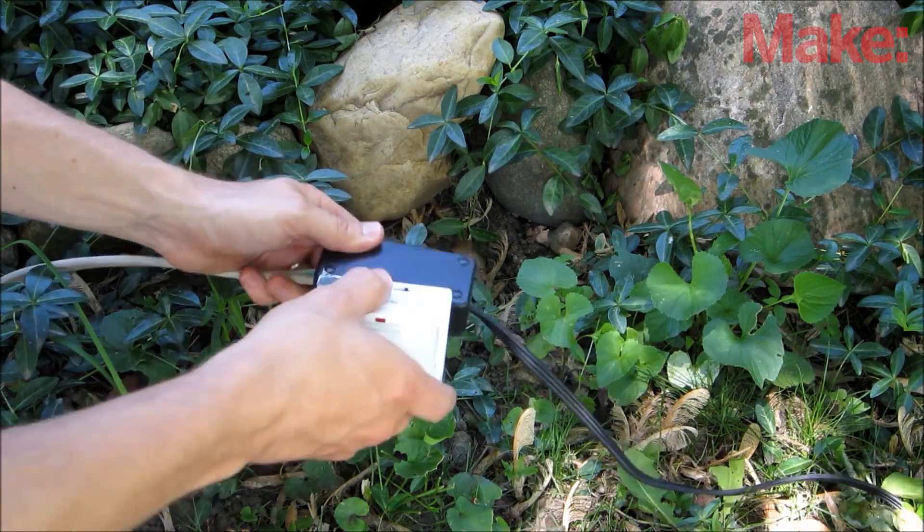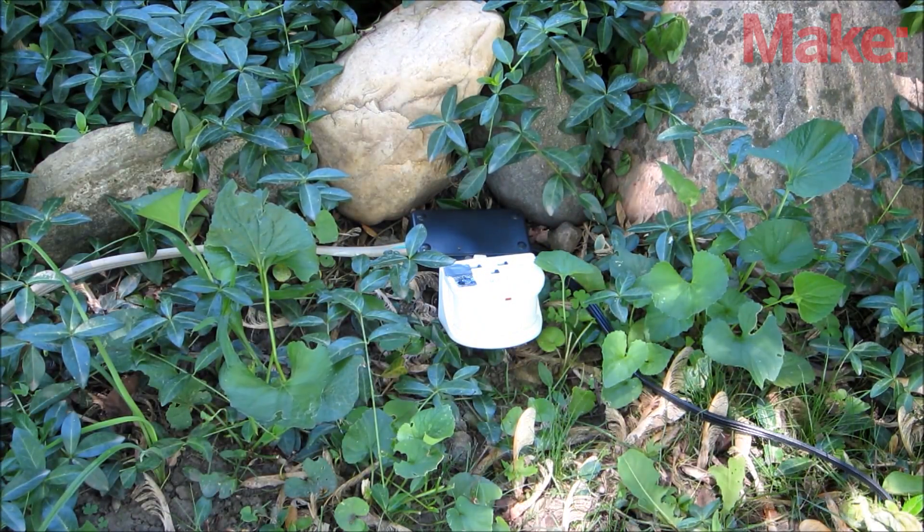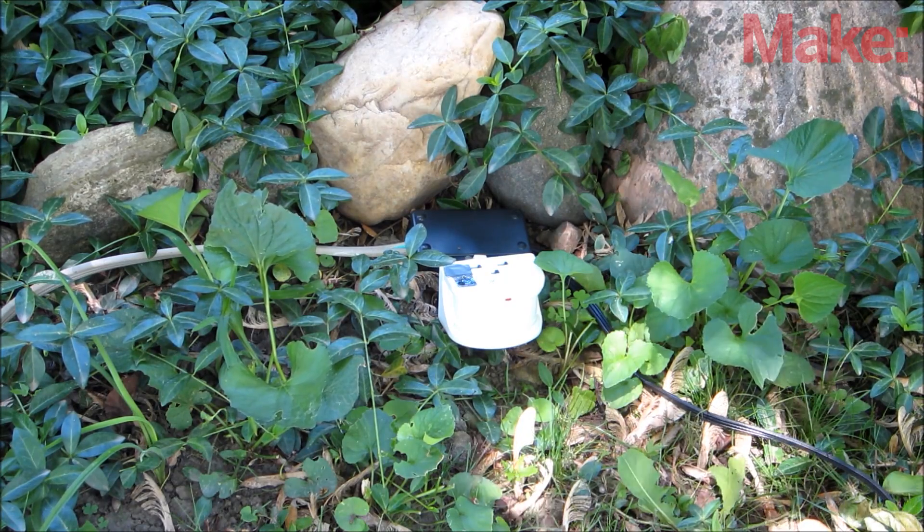Next, find a good place to hide the motion sensor. You want it to be somewhere in the shade and well away from any moving objects that might accidentally trigger it.